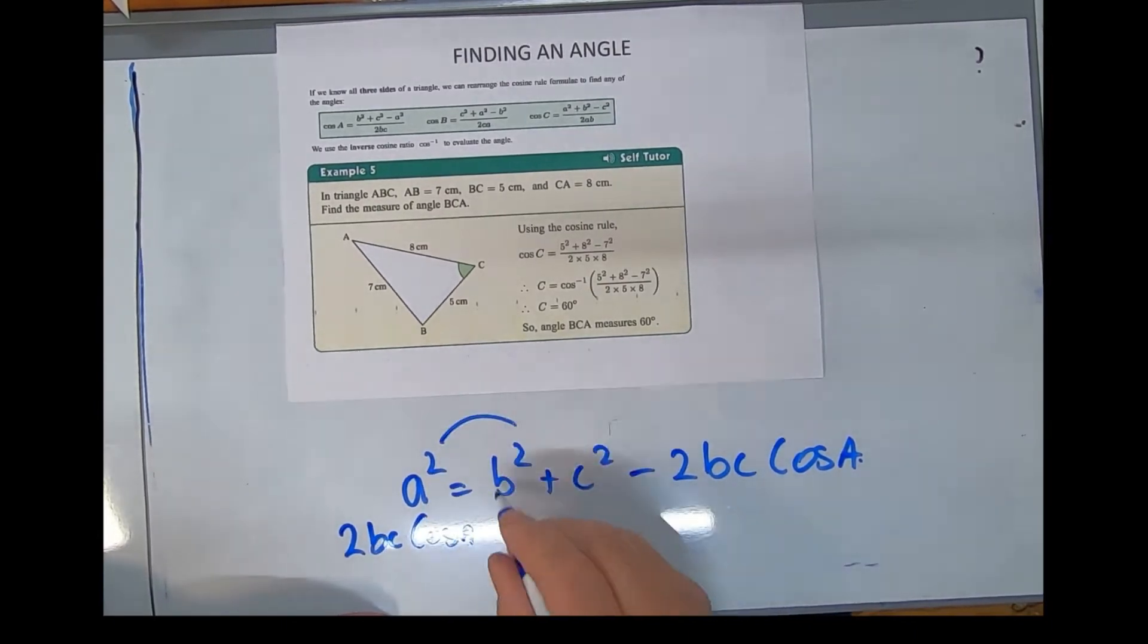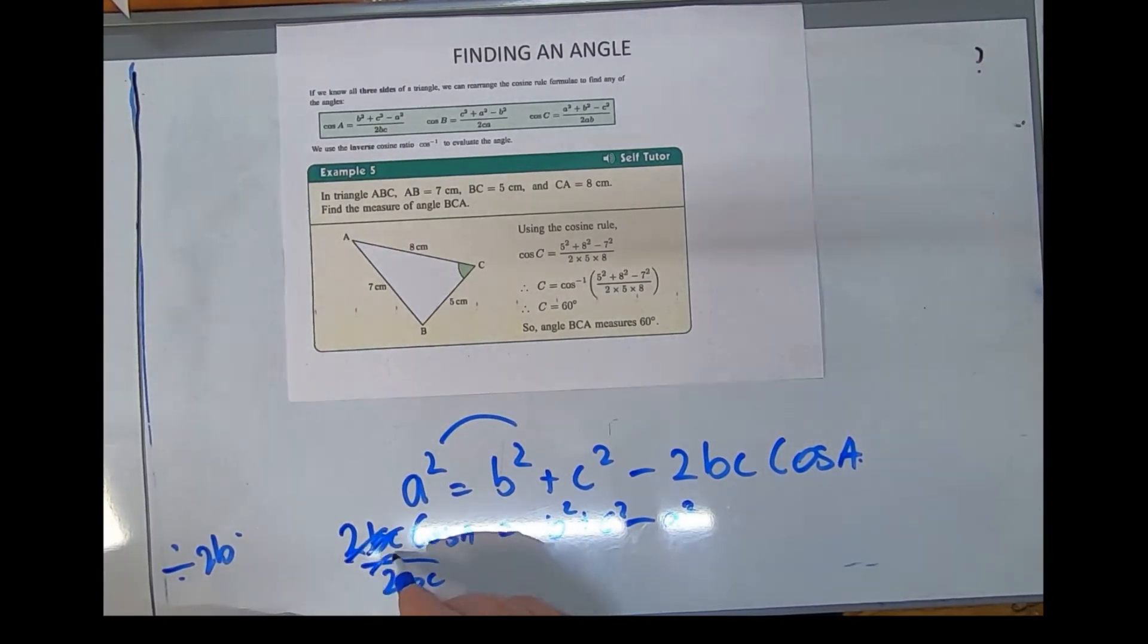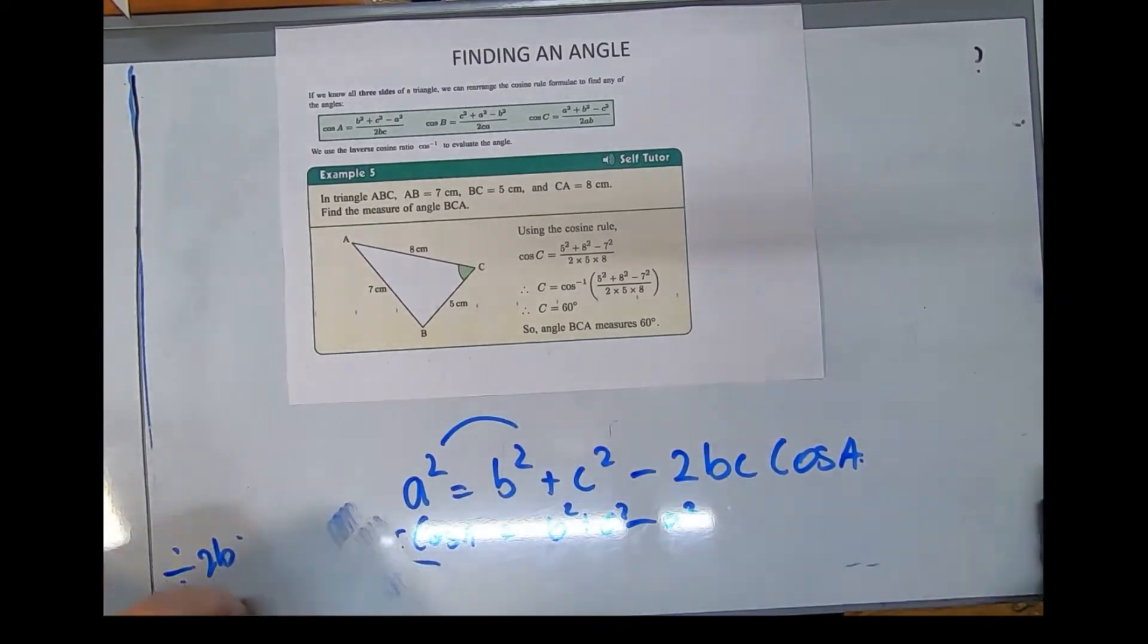Let's move that a² over there: b² + c² - a². Well, I don't want those numbers. Let's divide by 2BC. They cancel out—it's like they were never there. Of course, I have to divide this by that as well.